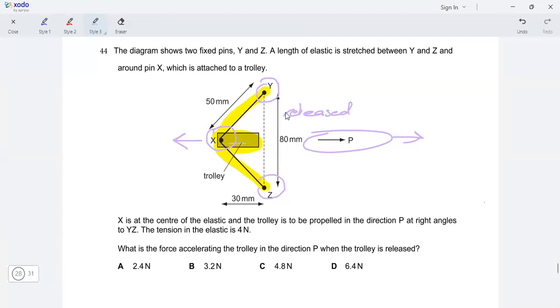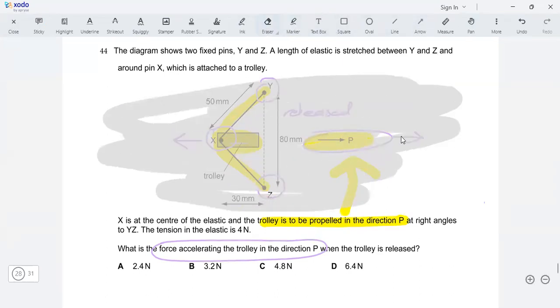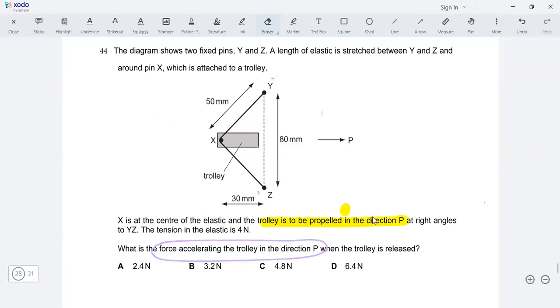Now the question is asking us to find the force that's accelerating the trolley in the direction of P. Basically this force, the P force is what we need to find. The force that is causing the trolley to be propelled in the direction of P. This is the force that we need to find. And what else is given in the question? We are also given the tension, the tension in the elastic, which is 4 newton.